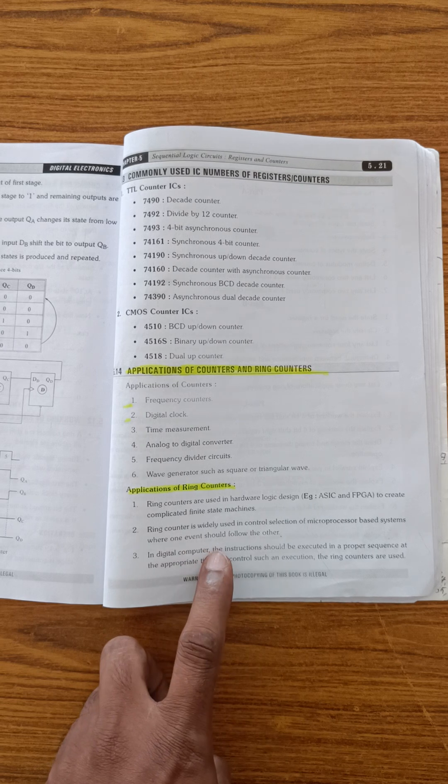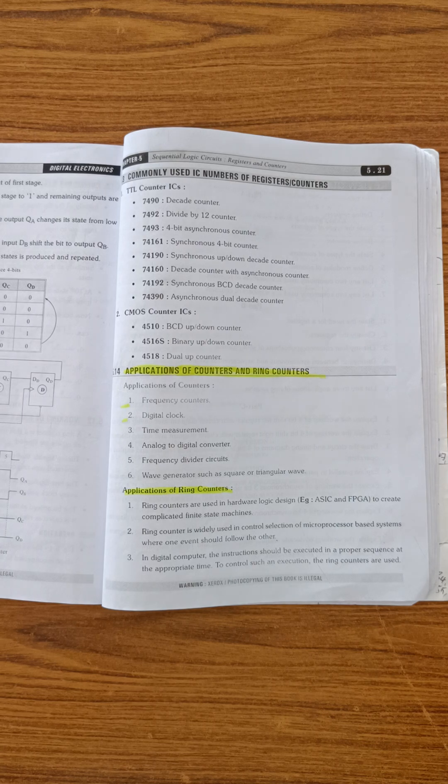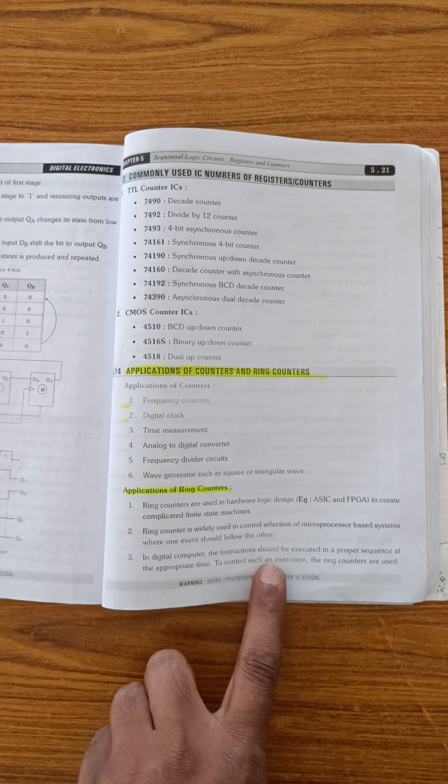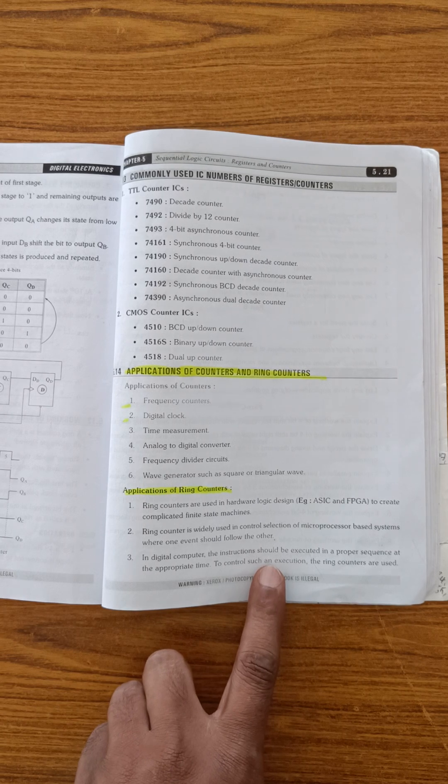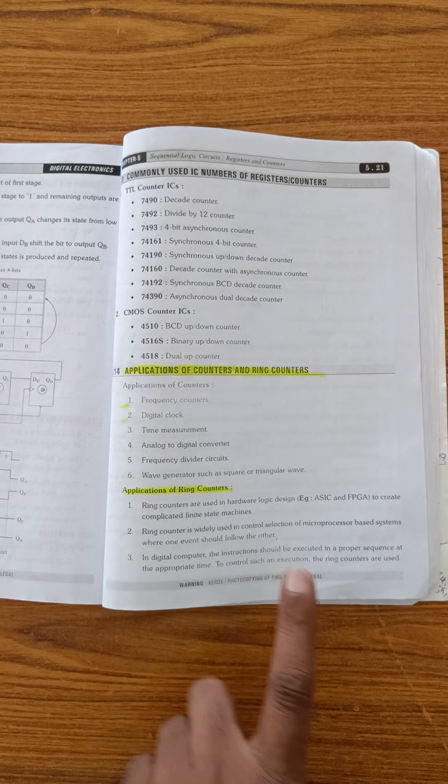In microprocessor applications, one event should follow another. In digital computers, instructions should be executed. Instructions are executed using ring counters in a proper order sequence.